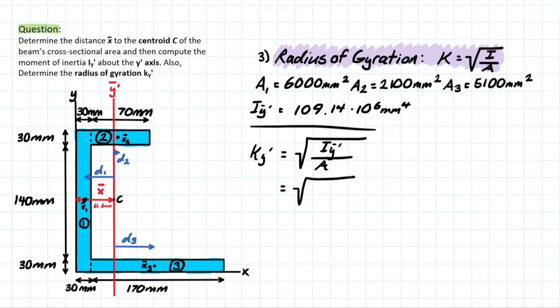So we have all these values already determined. So we have 109.14 times 10 to the power of 6 millimeters to the 4th over the total area, which is going to be 6,000 plus 2,100 plus 5,100, and that will all be millimeters squared. This will leave us with a final answer for the radius of gyration about that axis equal to 90.93 millimeters.